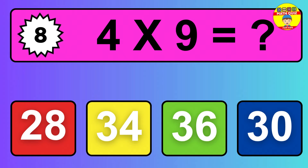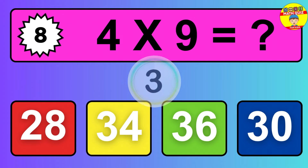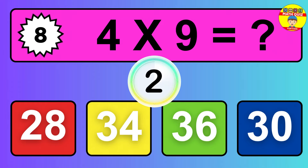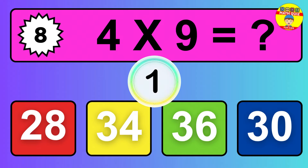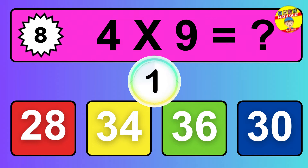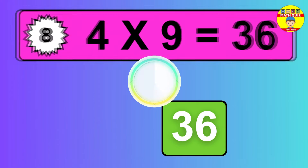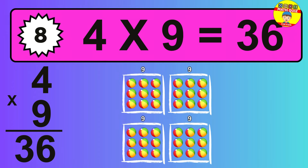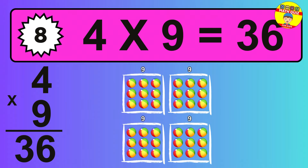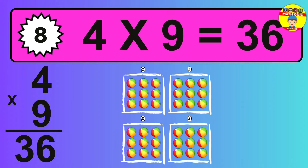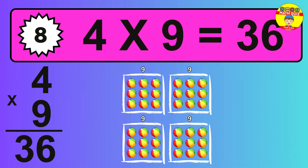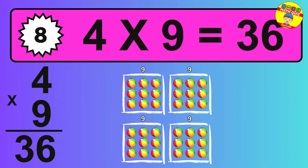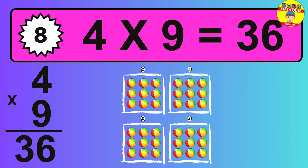Question 8. 4 times 9 equals what? The answer is 4 times 9 is 36. To calculate, we have 4 groups with 9 balls each one. So, how many balls do we have? 36 balls.